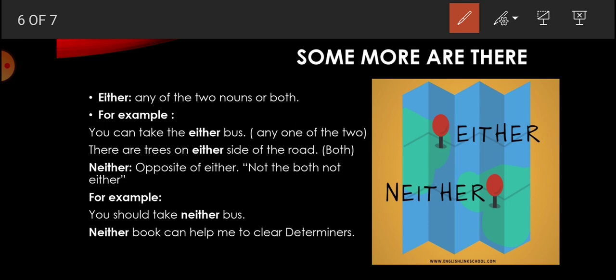Now let's move on. There are some other determiners where there is some confusion. So, the first student is either. Either students is used in two ways - for any of the two, for two nouns or for both nouns. For example, you can take either bus - you can take either bus from both. For example, there are trees on either side of the road. Students, if you have either and the situation has been given, you can use either.